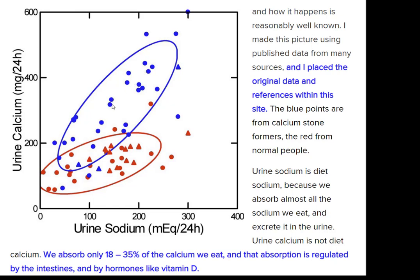The other side of that coin: as you drop your sodium down to 100 mEq per day — that's 2,300 milligrams, the tolerable upper limit for Americans — you start to come into the normal range. If you get down to 50 or 60 mEq, which is 1,500 milligrams a day, you can begin to bring your urine calcium into the normal range. That's an extraordinarily valuable thing to shoot for.